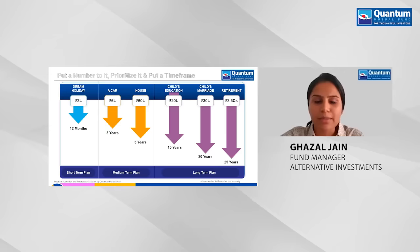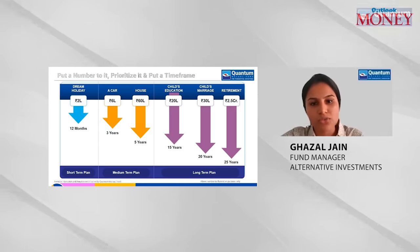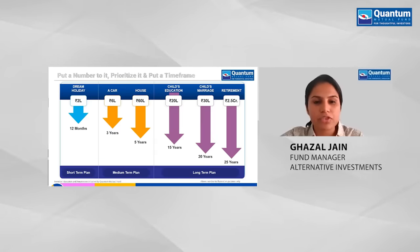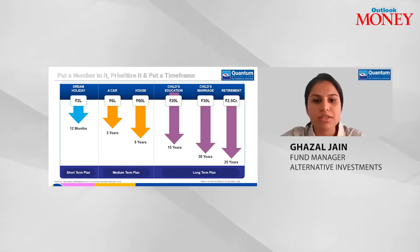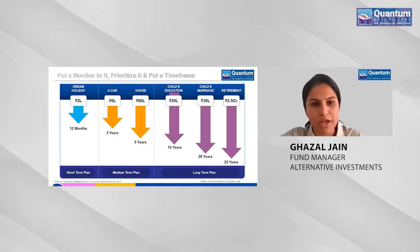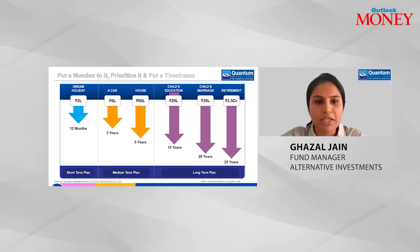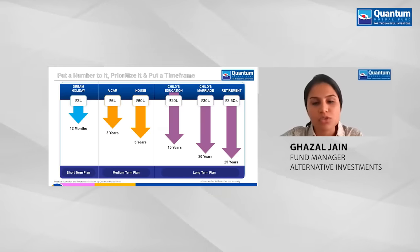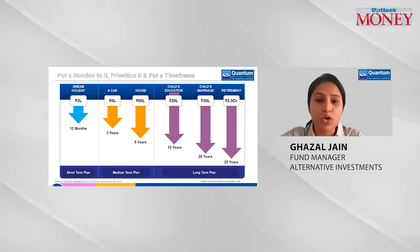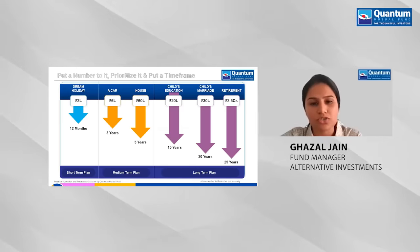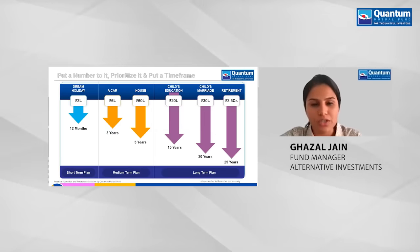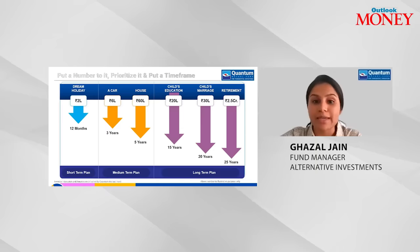After identifying your goals, try to put a number to each one so you can prioritize and give it a timeline. For example, a car or house is something you'd want in the next three to five years — a medium-term plan. A dream vacation could be something you save for in the next six months to one year. Long-term goals like a child's education or marriage need a different approach. Once you have a number and a time frame, you know what you're working towards and how much time you have to achieve it.